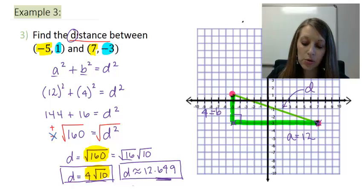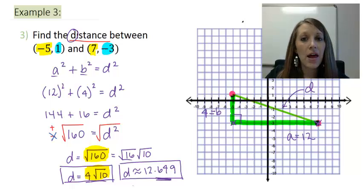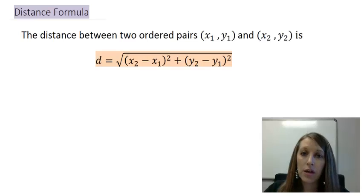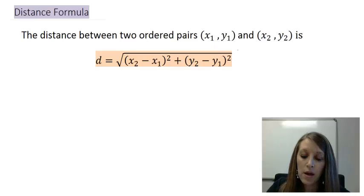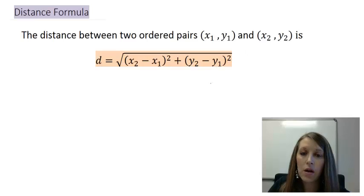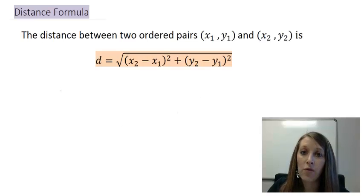So we've seen how to solve this one using Pythagorean's Theorem. Now let me actually introduce the distance formula. The distance between two generic ordered pairs — the first one is (x1, y1) and the second one is (x2, y2) — is given by the square root of (x2 minus x1) quantity squared, plus (y2 minus y1) quantity squared. You might ask how they came up with such a complicated formula, but this is the process we've walked through in the last three examples — it's Pythagorean's Theorem worked in a different way.